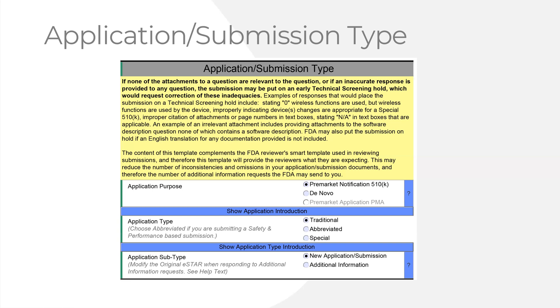On the left-hand side of the eStar, you can see status indicators: green means that selection is done, gray means it doesn't need to be filled in, and red means something is missing.